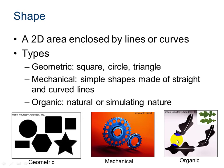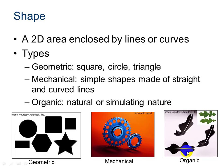Shape is a 2D area enclosed by lines or curves. Types of shapes are geometric — the familiar geometric shapes. Mechanical shapes are simple shapes made of straight and curved lines. And organic shapes are natural or simulate nature. So even though this picture in black does not look like a leaf, it was inspired by the shape of a leaf, and that's why it's considered organic.